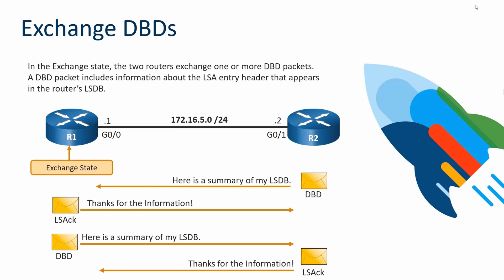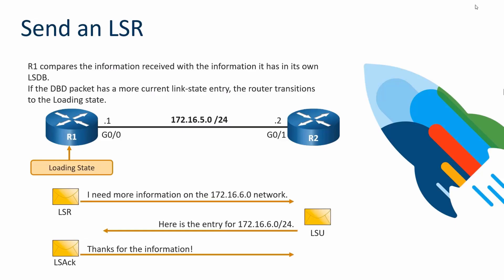OSPF likes to be reliable. After both routers have exchanged their Database Description packets, they respond with LSRs and LSUs. An LSR (Link State Request) asks for more detail on specific network entries seen in the DBD packets that the router didn't already know about. The other router responds with an LSU (Link State Update) providing the requested information, followed by an acknowledgement for reliability.